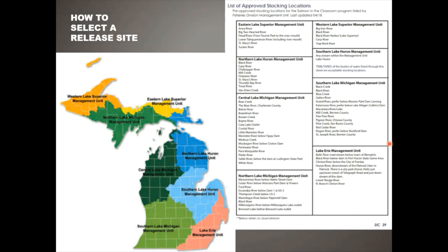On how to select a release site: in your teacher guide on pages 38-39, there is a map where you can figure out which management unit you are in, and then a chart that tells you what rivers in that unit are approved. For example, near Southern Lake Huron Management Unit, any tributaries of bodies of water listed in that area are okay — any river, stream, or ditch that connects to a river flowing out to Lake Huron.